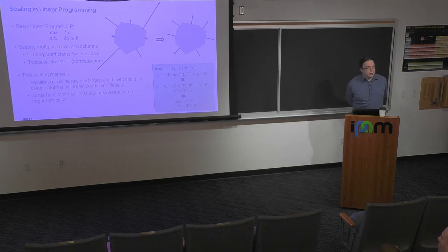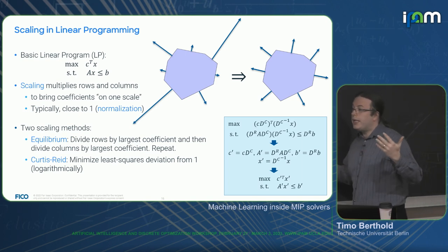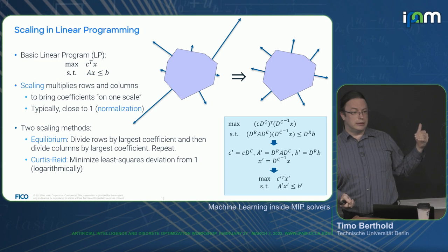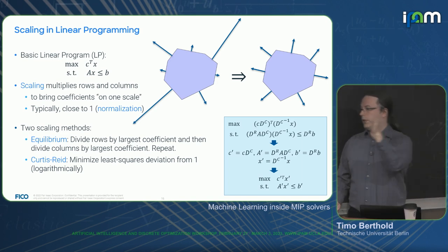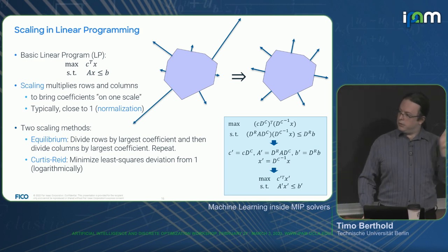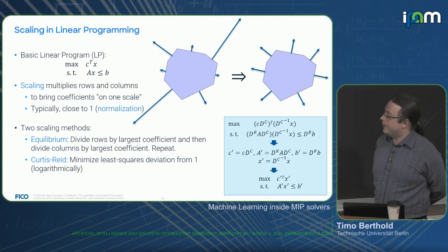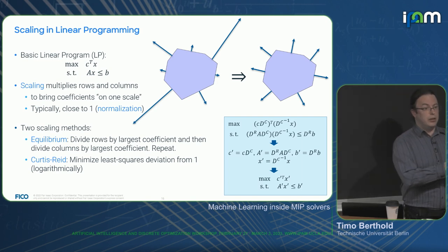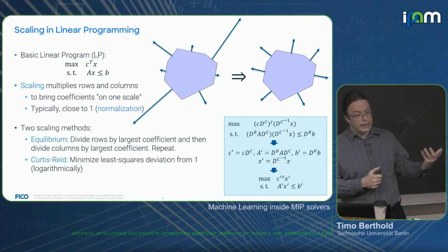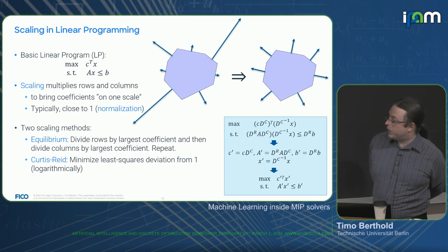There are two principal scaling methods used in solvers. The first is equilibrium scaling — the simplest approach: go through each row, divide by the largest entry to bring it down to one, then do the same column-wise, and repeat a few times. The second is Curtis-Reid scaling, which solves a small auxiliary optimization problem to minimize the least-squares deviation from one of all your coefficients — a more global view.